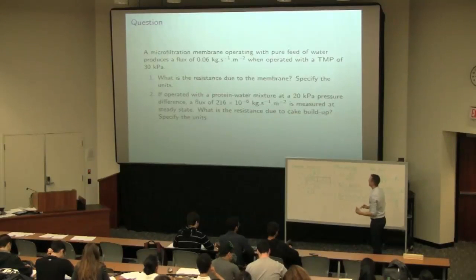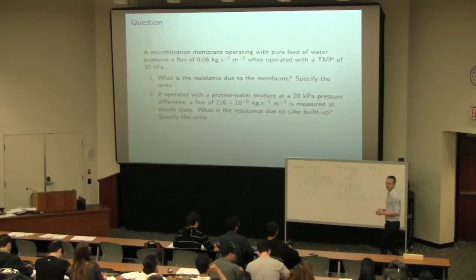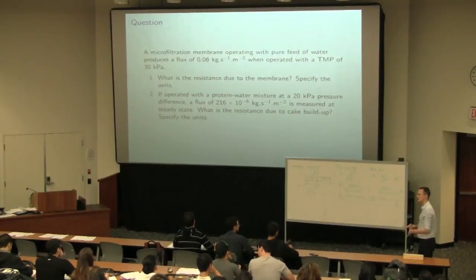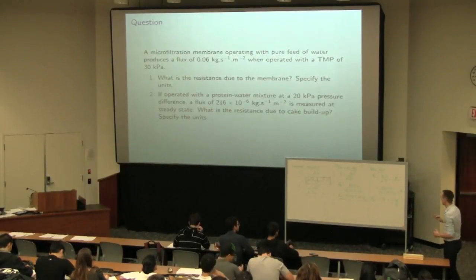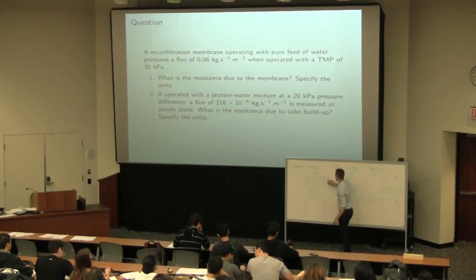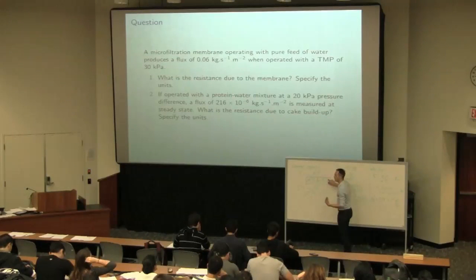And under tangential flow, that cake resistance will reach a steady state. Once the system gets going for a while, a certain amount of cake will get built up, but it will also get sheared off by the tangential velocity. So that LC, the thickness of the cake, will steady up at some constant value once the membrane gets going for a while. That's important to realize.